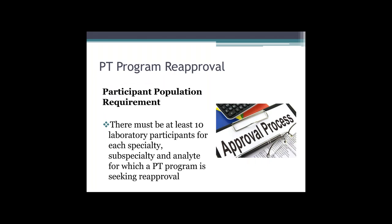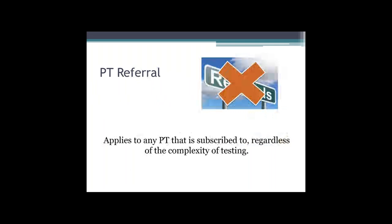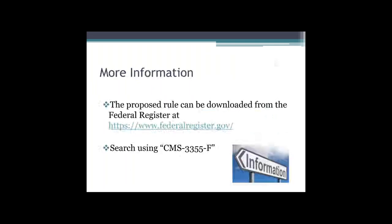The CLIA regulation determines who can be an approved PT provider. The newly revised rule includes a new provision stating that programs going for re-approval must have at least 10 participants for each specialty, subspecialty, and analyte for which they are seeking re-approval. PT referral has always been a significant part of the CLIA regulation because PT is such an important exercise to ensure labs are producing quality results. PT referral in the past has always applied to moderate and high-complexity testing. The finalized rule now includes waived testing in that expectation, and this element of the rule has been in effect as of August 10th.